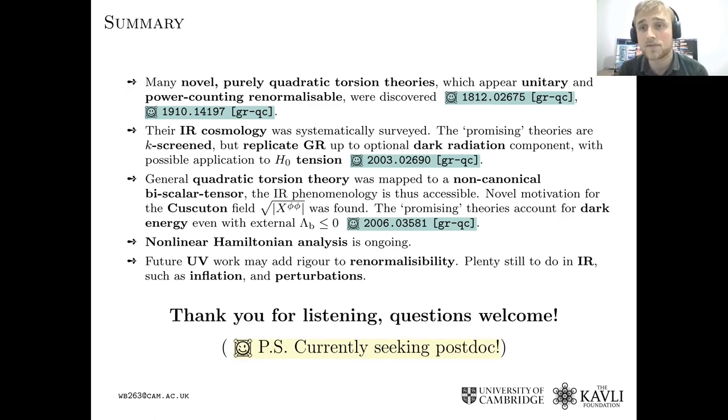So in summary, there were recently discovered a large number of new quadratic torsion theories which are potentially unitary and renormalizable by power counting. We systematically surveyed the infrared cosmology of these theories, the background cosmology. And we found that despite this strange k-screening phenomenon, the dynamics of the cosmology actually replicates general relativity. You can add an optional component of dark radiation in the early universe and it's possible that this could be applied to the Hubble tension problem. We then developed general mapping from quadratic torsion theories to the bi-Galileon and found a new motivation for the cuscuton theory. And we used this formalism to show that the theories, not only do they contain an optional dark radiation component, but you can use them to generate dark energy and asymptotic de Sitter states, even if the cosmological constant is zero or actually negative.